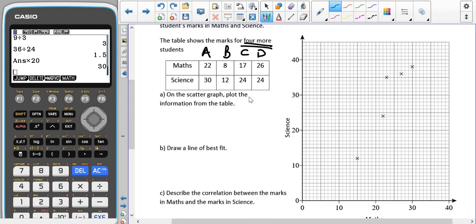So on the scatter diagram, we're going to plot the information from the table. Here we already have the five data points that have already been plotted for us, and we're going to add these four to it. And that's quite important that usually in the exam they're not going to get you to plot a lot of data points because that takes a lot of time and it's not really showing much skill.